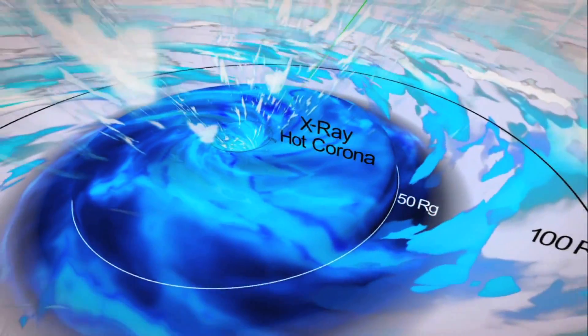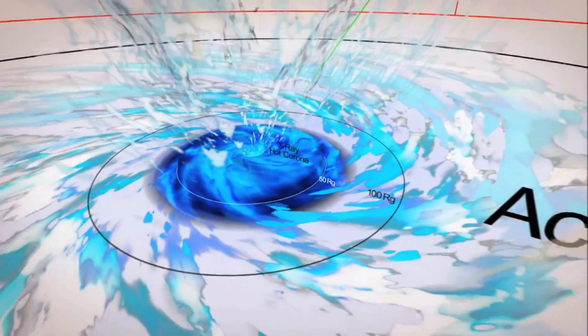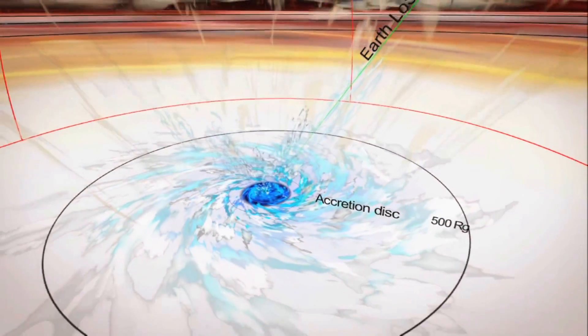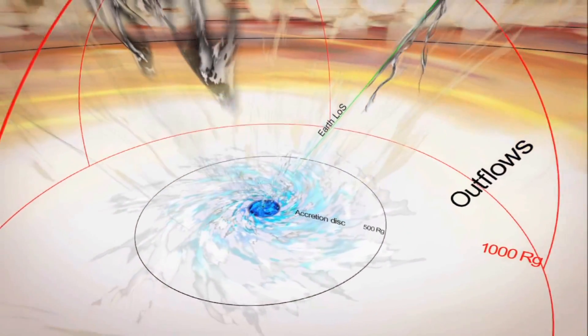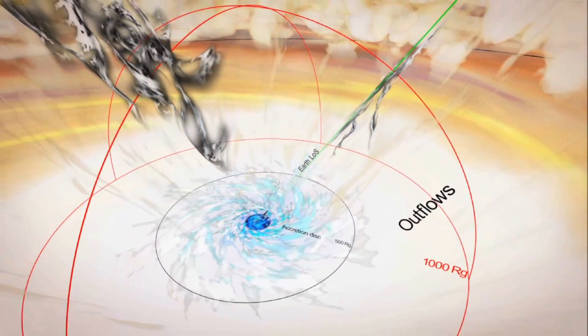As matter is drawn in toward the event horizon of the black hole, it flattens to form what's called an accretion disk. The material spins up, heats up, breaks up, and lights up.